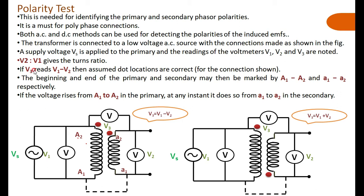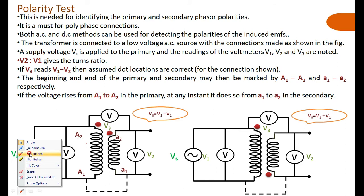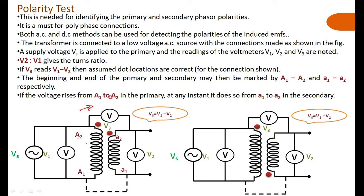To explain: in the first case, there is a rise in potential in the primary and also a rise in potential on the secondary side — so V3 shows V1 minus V2. In the second case, there is a rise in potential in the primary side (V1), and in the secondary side the voltage is rising from one point to another point (V2), so the total voltage V3 equals V1 plus V2 because they are adding together.